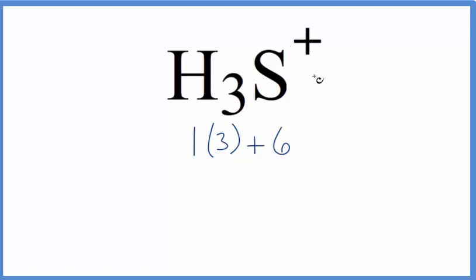So imagine this, if you're positive, that means you've lost a negative charge. So if this structure loses an electron, which are negative, it'll become positive. So we need to lose one electron. So when we do that, we have 3 plus 6, that's 9, minus 1, total of 8 valence electrons for this H3S+ Lewis structure.